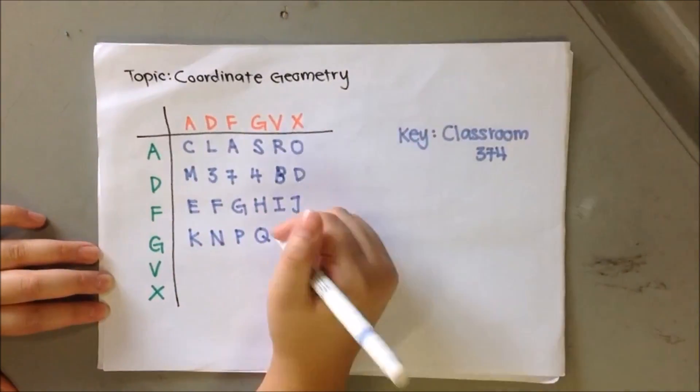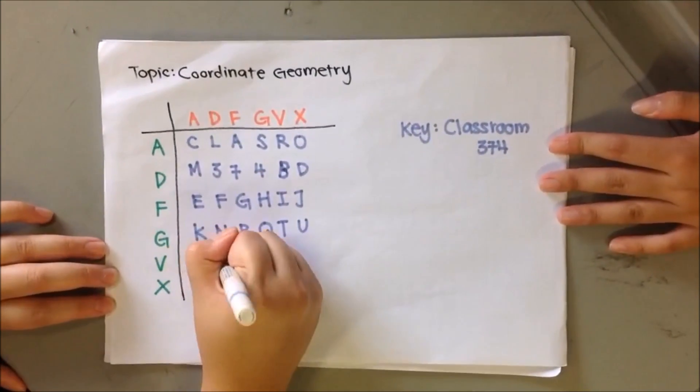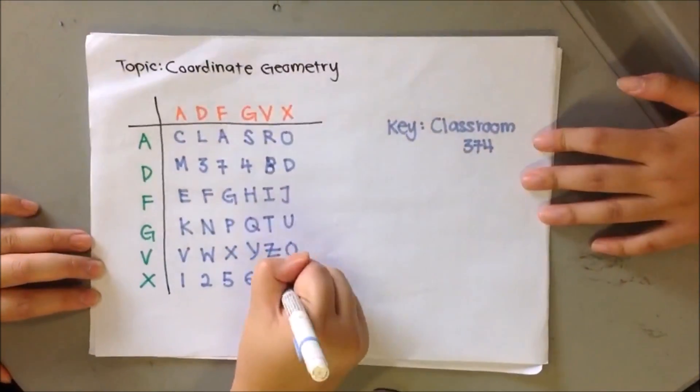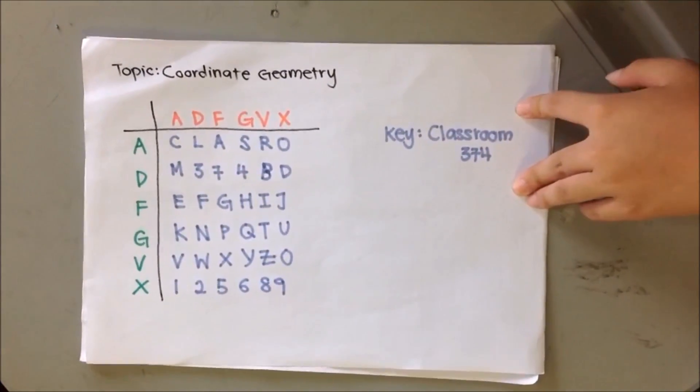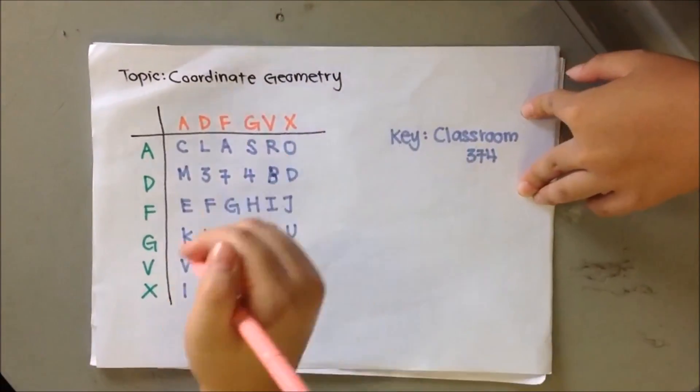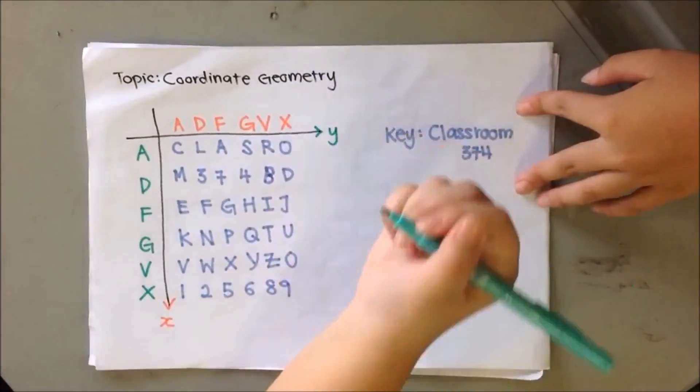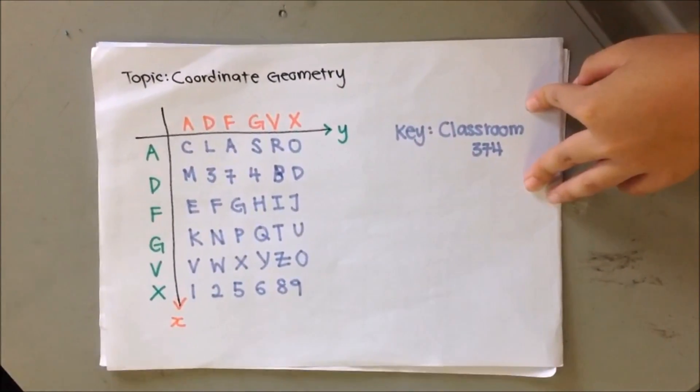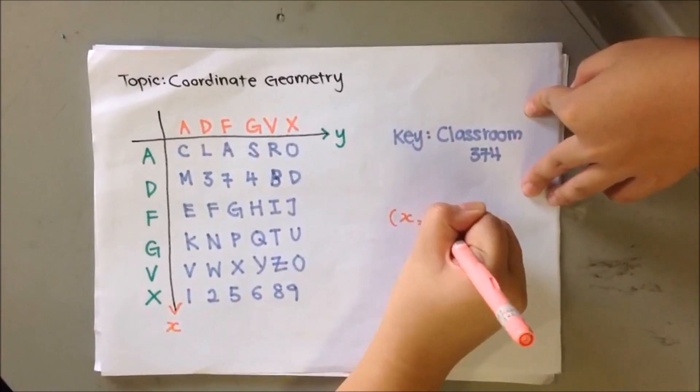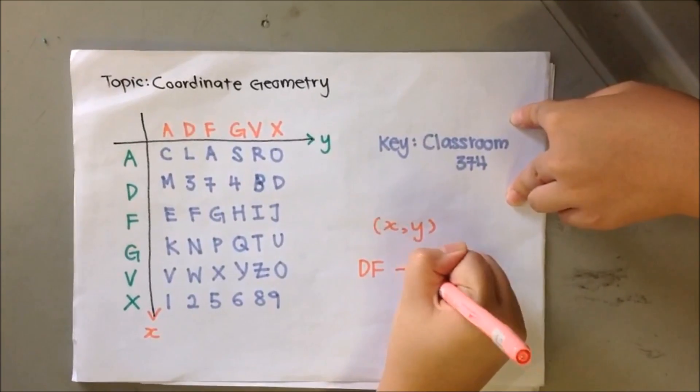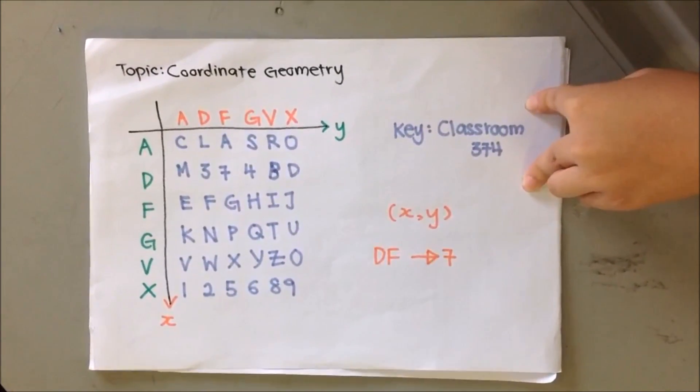Again, skip all repeating letters and numbers. This will look like the final template for the key, Classroom 374. Let's take the vertical axis as X and the horizontal axis as Y. Hence, the encrypted message will be in the form of XY. For example, the encrypted message DF will represent the number 7.